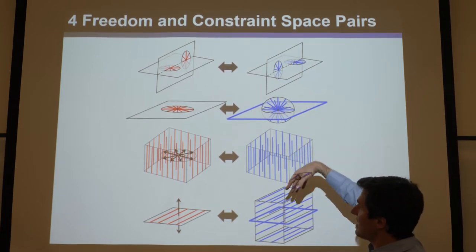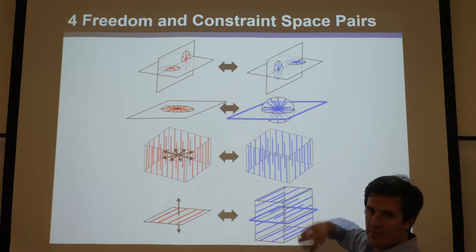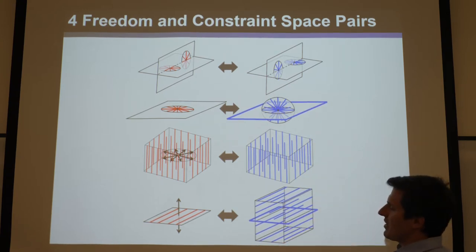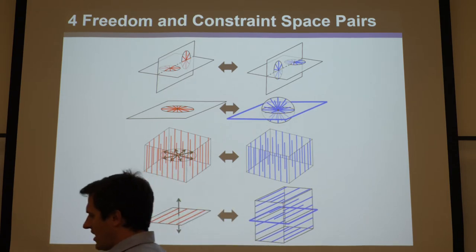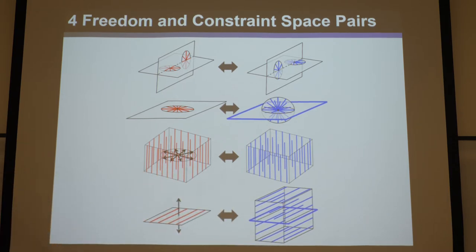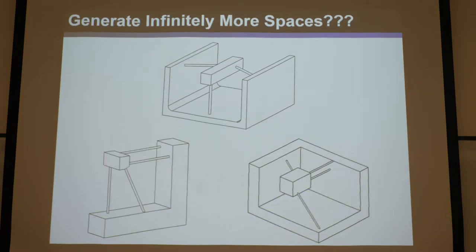There are sub-constraint spaces within these as well. But here's the thing — this is all fine and good, and you can see this is kind of exciting: you can show freedom spaces for a mechanism and constraint spaces to show how they're designed. But the problem is there are infinite designs out there.